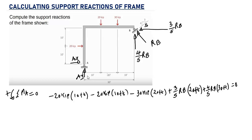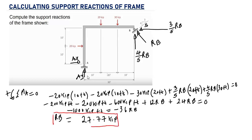Solving the moment equation, ROB is equal to 27.77 kip. Because we get a positive value, our assumed direction is correct, meaning ROB acts upward as an inclined reaction.